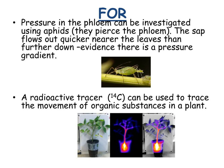The pressure in the phloem can be investigated using aphids. They pierce the phloem and the sap flows out quicker nearer the leaves than further down, which is evidence of a pressure gradient. Also, a radioactive tracer such as carbon-14 can be used to trace the movement of organic substances in a plant.